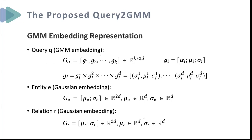Formally, the GMM embedding for a query is represented as the mixture of univariate Gaussian distributions, and the embedding of each component is represented by the d-array Cartesian product of three semantic ingredients. Each entity of the knowledge graph is represented by a univariate Gaussian distribution embedding with learnable mean value and standard deviation. The standard deviation serves as the scaling of the distribution, enabling entity embeddings to approach multiple query embeddings with different semantics simultaneously. Each relation of the knowledge graph is also represented as a Gaussian distribution.